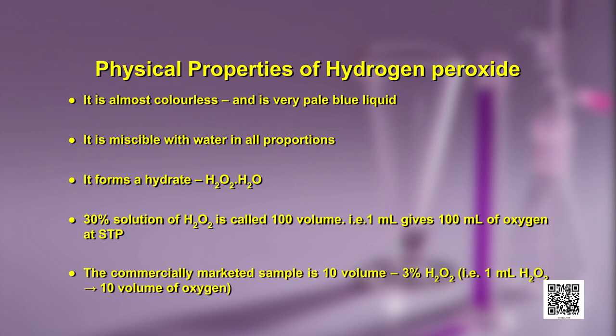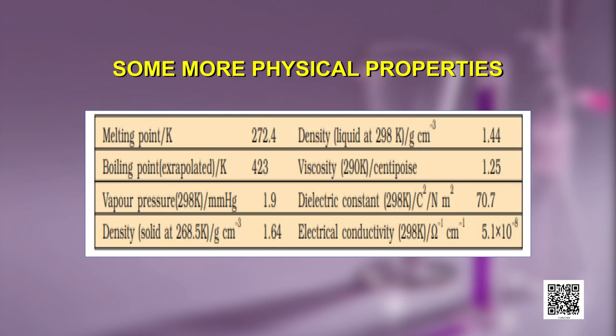The commercially marketed sample is 10 volume, meaning its concentration is 3 percent — 1 ml of H₂O₂ gives 10 volumes of di-oxygen. The other physical properties shown in the table can be compared with those of water.